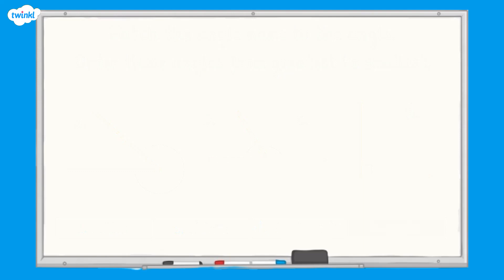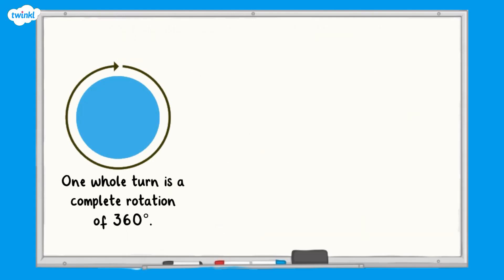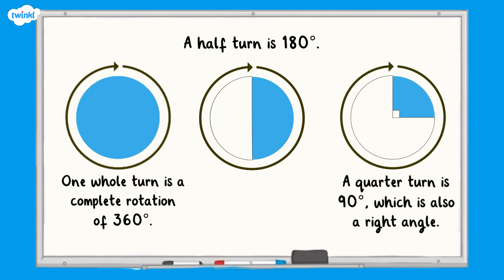Angles can also be described as a turn. One whole turn is a complete rotation of 360 degrees. A half turn is 180 degrees. A quarter turn is 90 degrees, which is also a right angle.